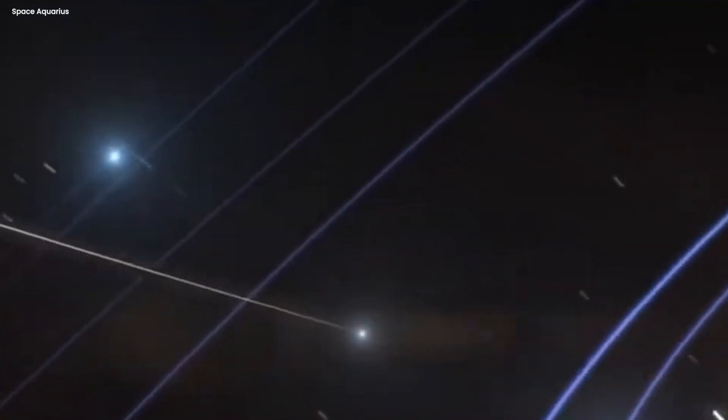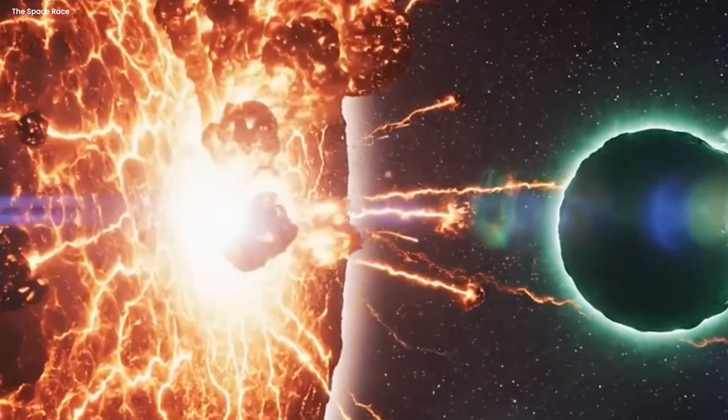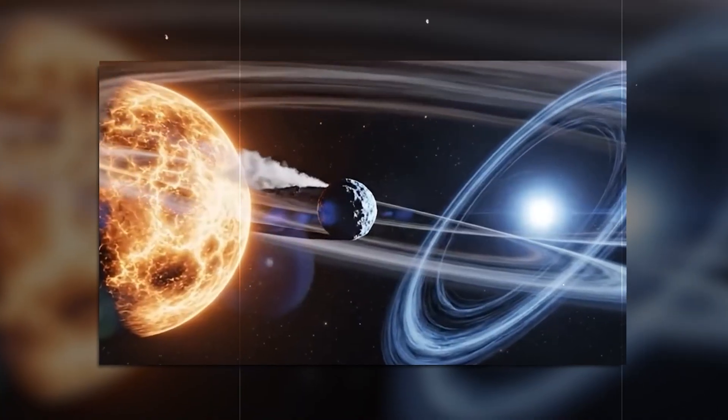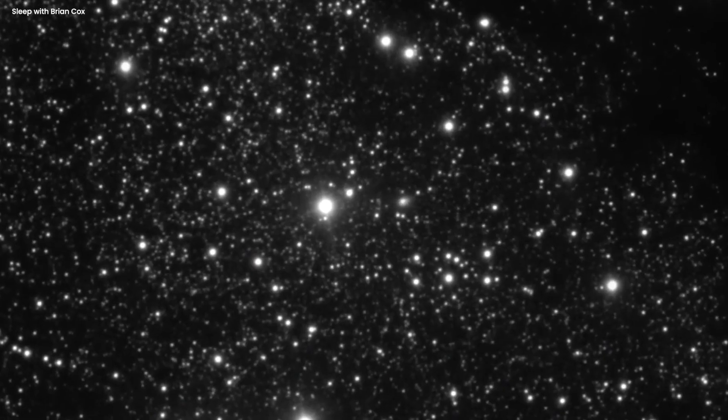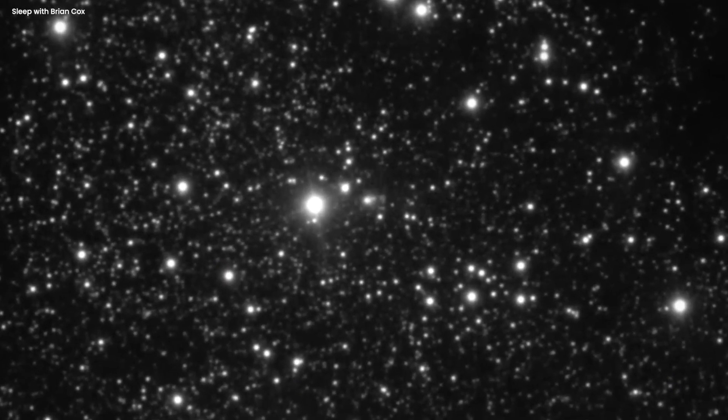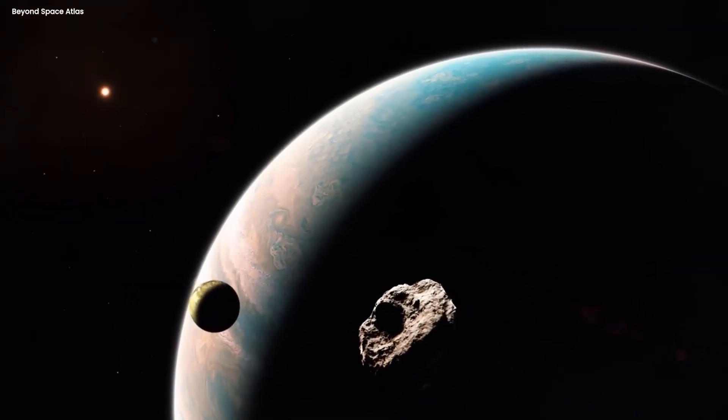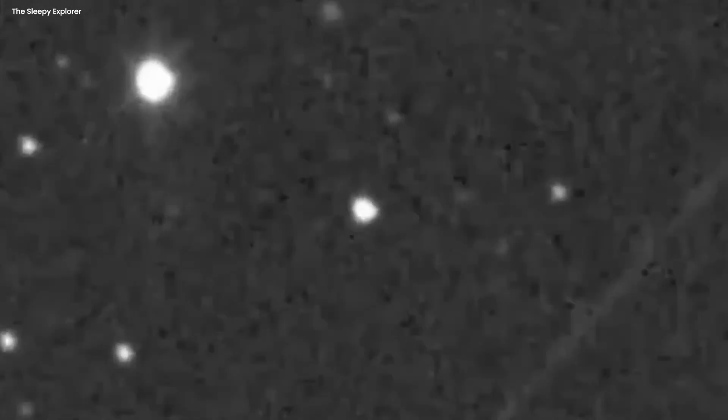And that doesn't sound like the behavior of an alien probe that traveled billions of miles across interstellar space just to check out planet Earth. Because if you're going to make a journey like that, you don't show up on the wrong side of the Sun. You don't hide behind the brightest object in the solar system. You make an appearance. You get close enough to actually observe the planet you came to visit. But 3I Atlas didn't do any of that. It sailed right past us at a distance where Earth would have barely registered as anything more than a tiny blue dot in the darkness. And for an object that supposedly came here to study our planet, that's a pretty disappointing performance.